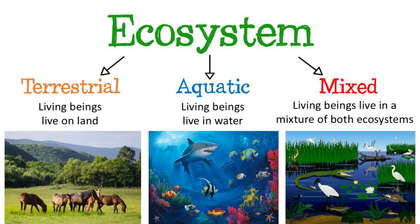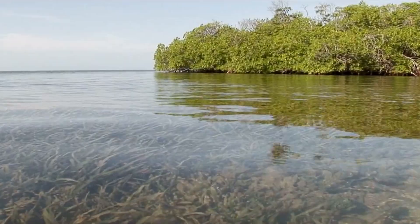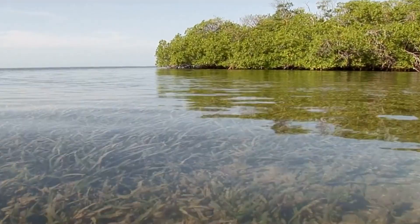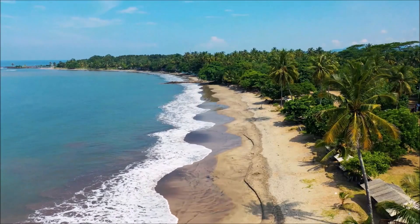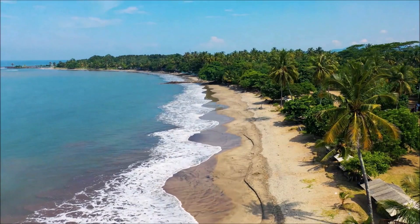And finally, mixed ecosystems are those where living beings live in intermediate zones between a terrestrial ecosystem and an aquatic one. This type of ecosystem is a mix between the characteristics of both ecosystems, and examples include mangroves, swamps, and coasts, among others.